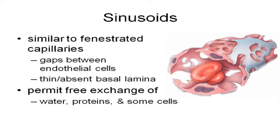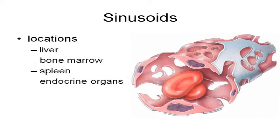The sinusoids are basically the leakiest — there are huge gaps and they may even lack that basal lamina. The liver is where you find these; there are lots of sinusoids in the liver. Basically even some cells can get out and cross these big gaps. In the case of bone marrow, the bone marrow is producing all of your cells — white cells, red cells, platelets — and so that stuff has to get out of the bone marrow into the bloodstream, which is why you need the big sinusoids.